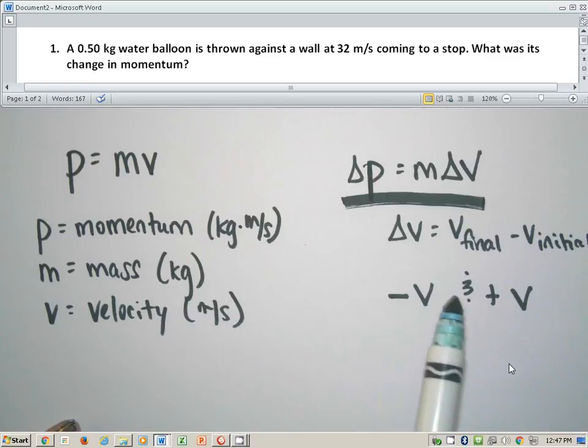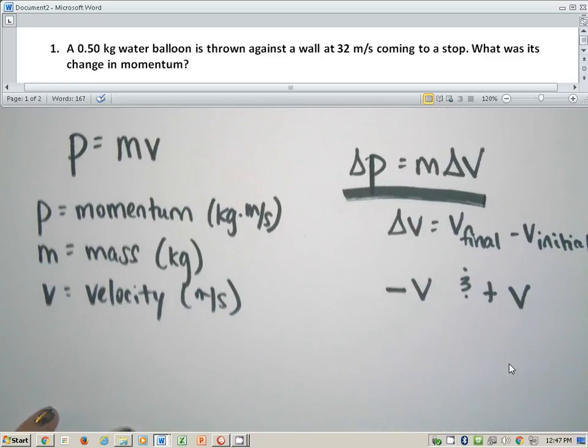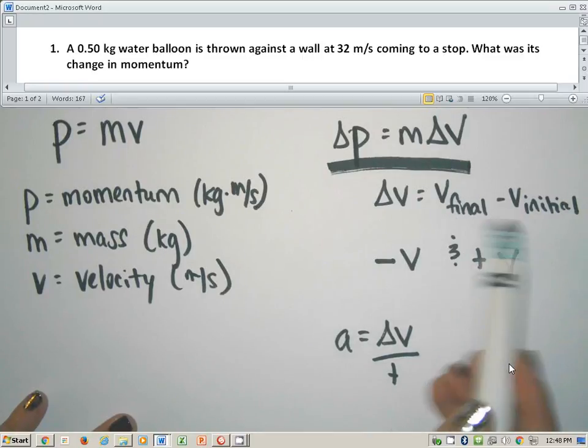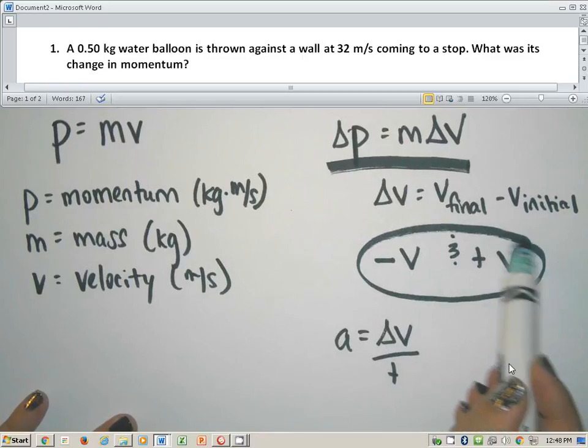Main thing to remember is that delta v means v final minus v initial. It's exactly the same delta v from this equation where you find acceleration and you have change in velocity over time. We're just going to do final minus initial.